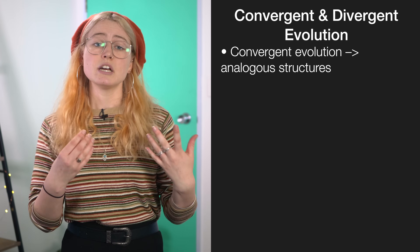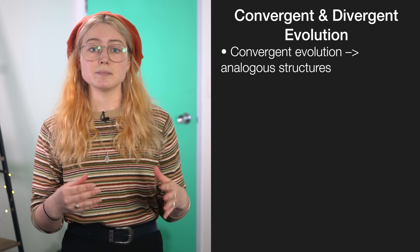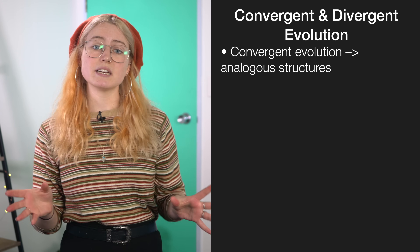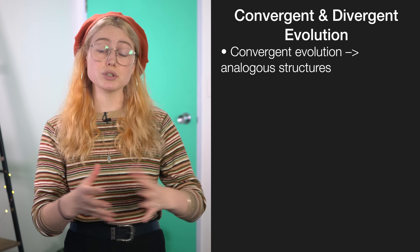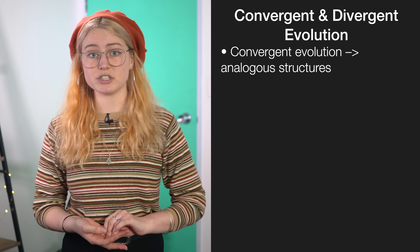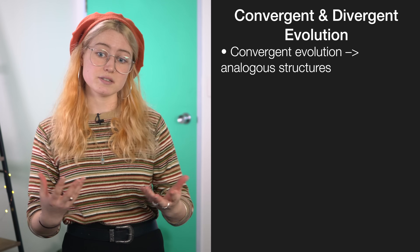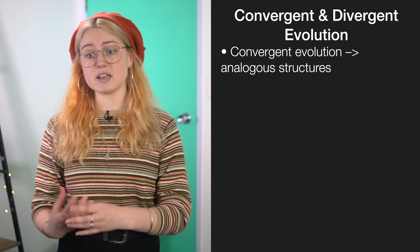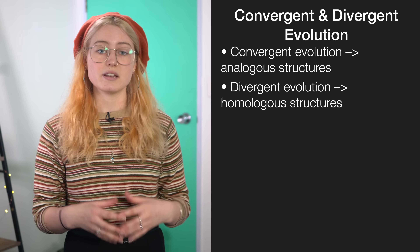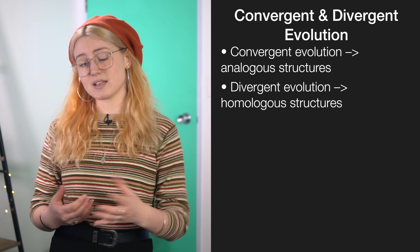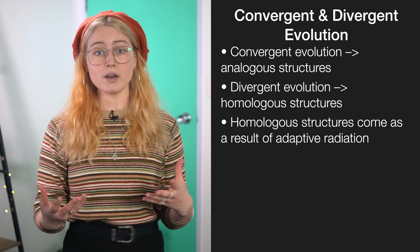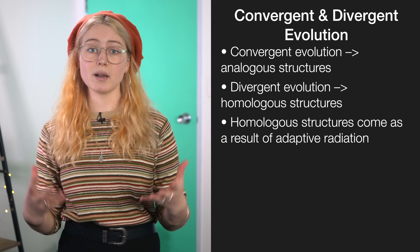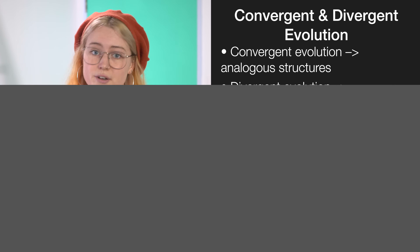Divergent evolution comes as a result of one species splitting into a lot of different kinds of species due to new selection pressures as they fill different kinds of niches. The thing that's associated with this is homologous structures. A good example of this would be the fin of a whale versus a human arm. The name that we apply to this is adaptive radiation.